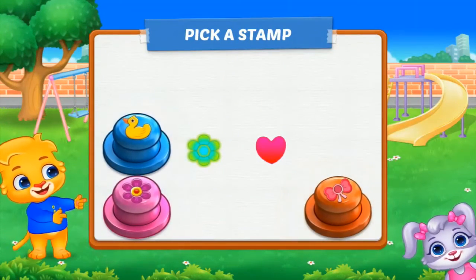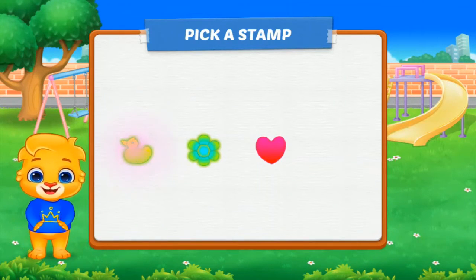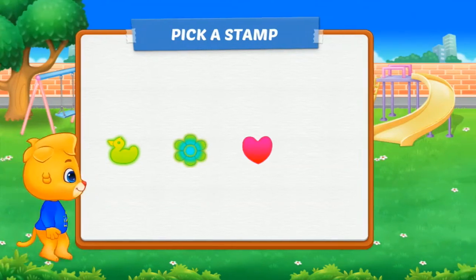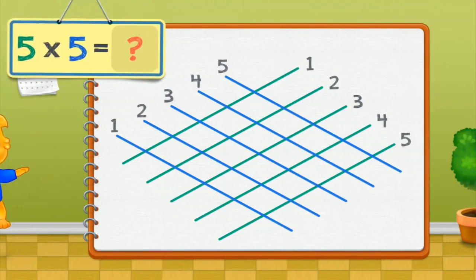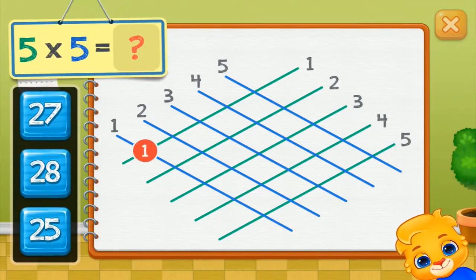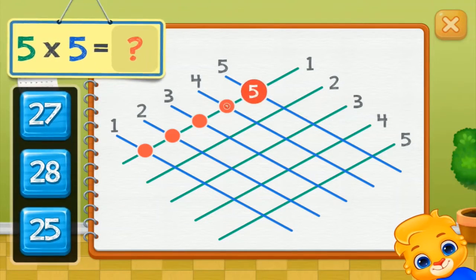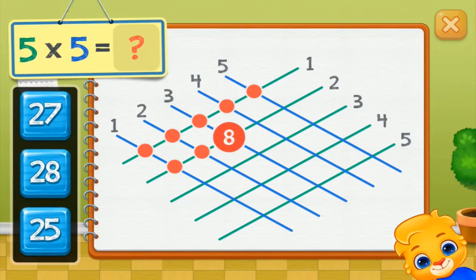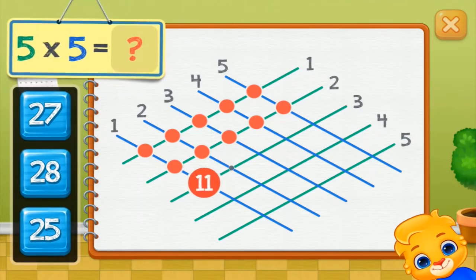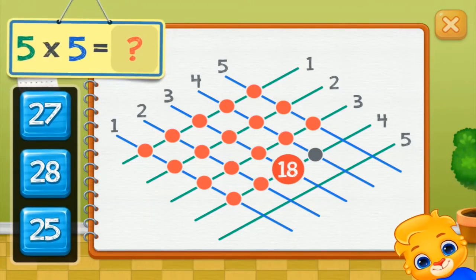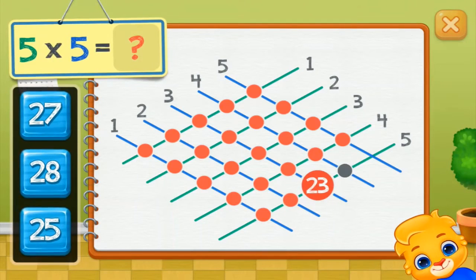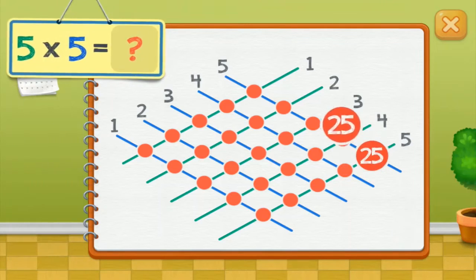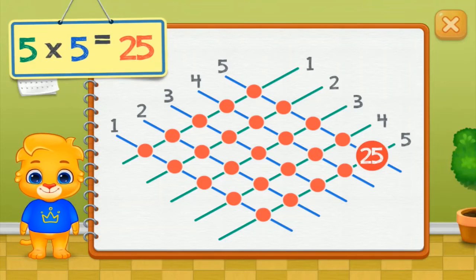Pick a stamp. Five times five equals one, two, three, four, five, six, seven, eight, nine, ten, eleven, twelve, thirteen, fourteen, fifteen, sixteen, seventeen, eighteen, nineteen, twenty, twenty-one, twenty-two, twenty-three, twenty-four, twenty-five. Five times five equals twenty-five.